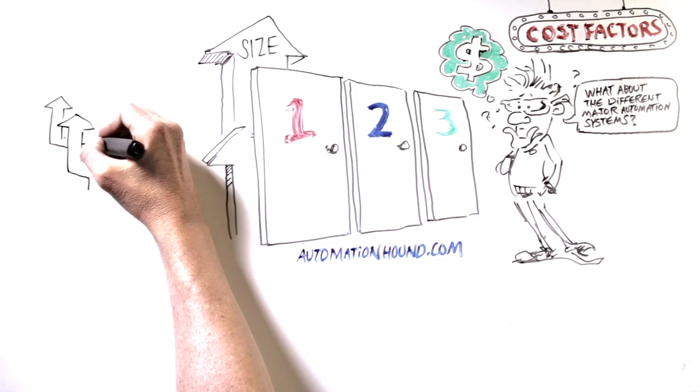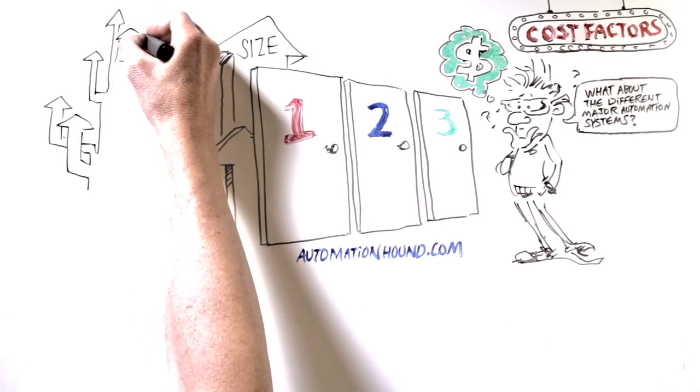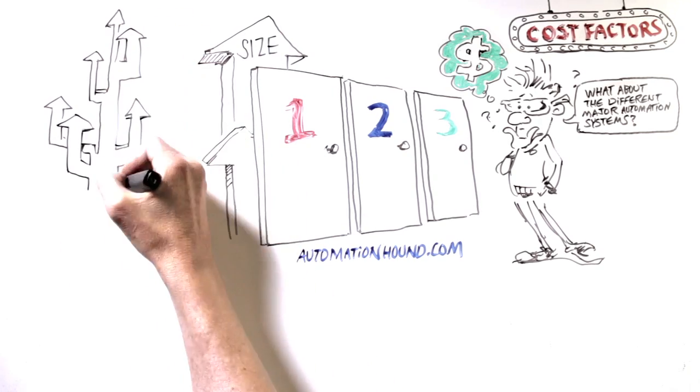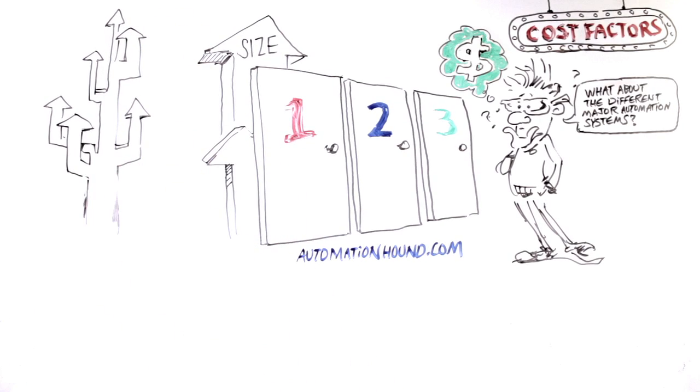The complexity of the home automation system is also a big factor. As an example, creating buttons with logos of your favorite cable networks will cost more than the standard channel up, channel down.